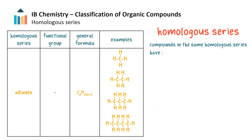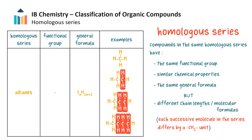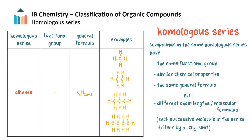Using the molecules in the table as an example, we can see that a homologous series is a group or sequence of compounds with the same functional groups — in this case none, since the molecules are all fully saturated hydrocarbons — and thus similar chemical properties and the same general formula, but different chain lengths and thus different molecular formulas. Each successive compound in a homologous series differs by a CH₂ unit.